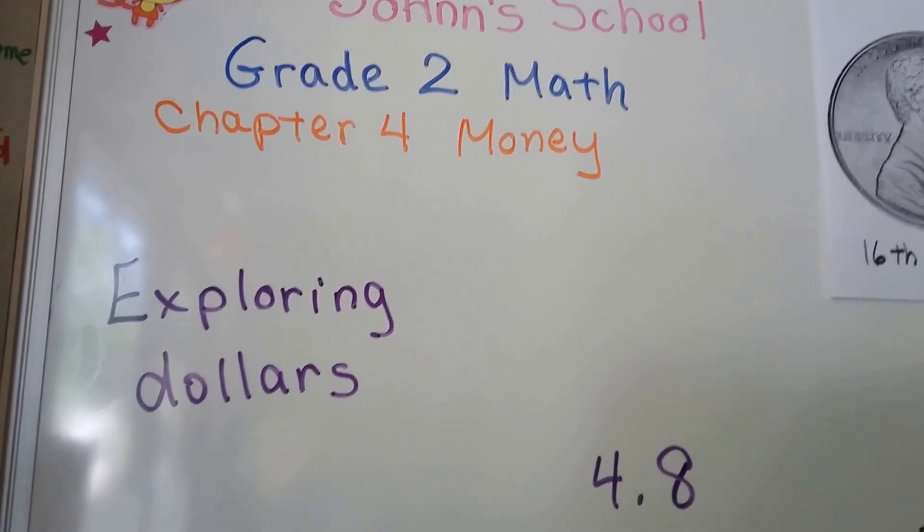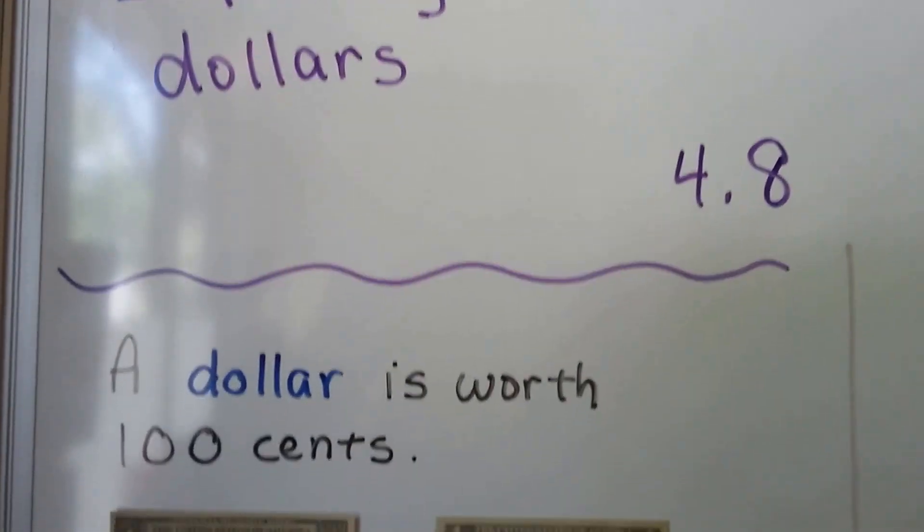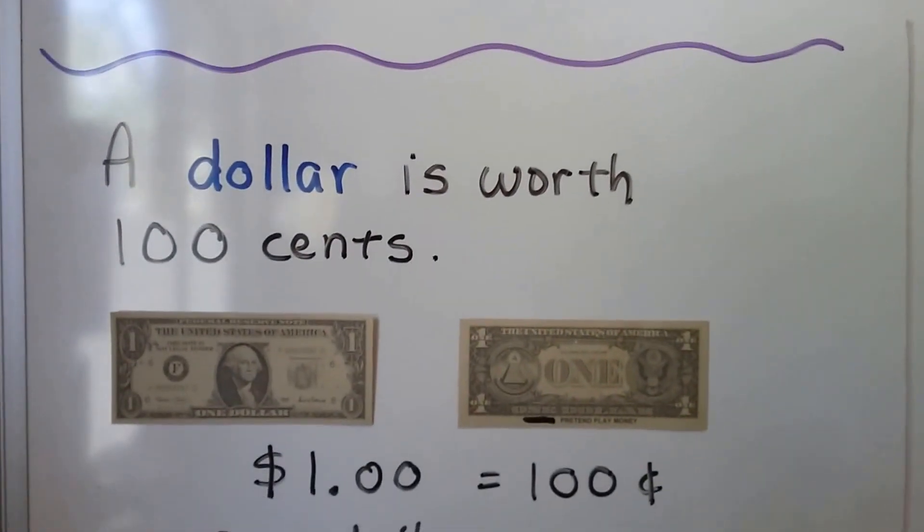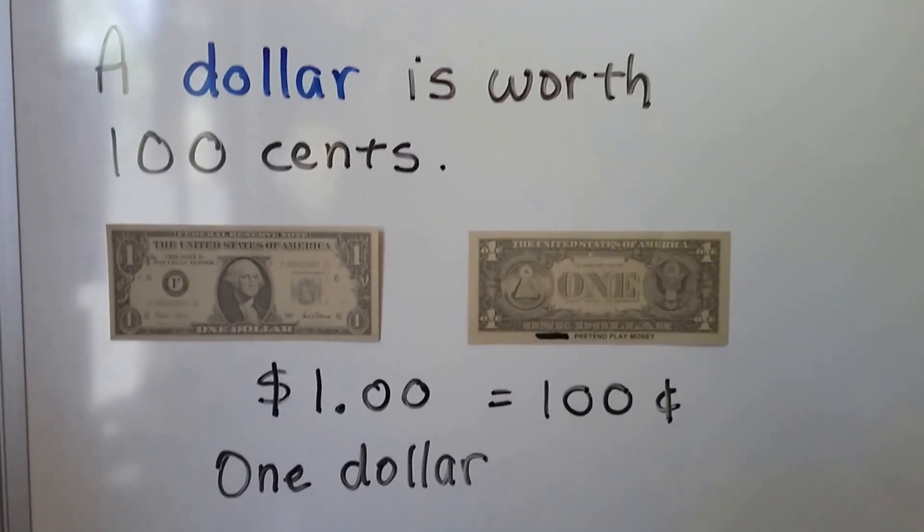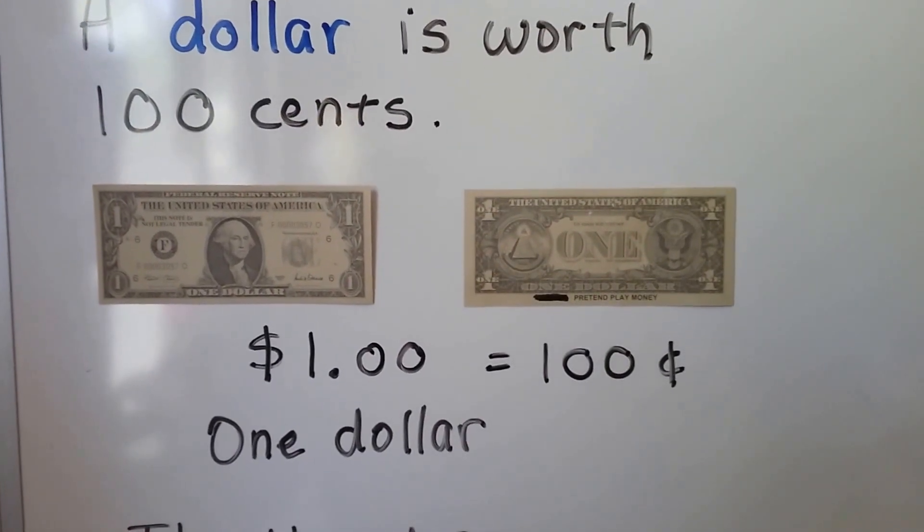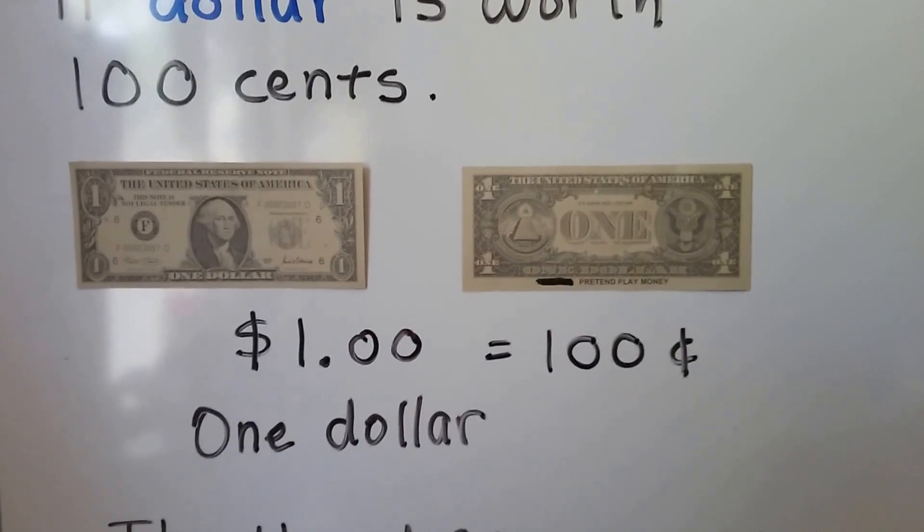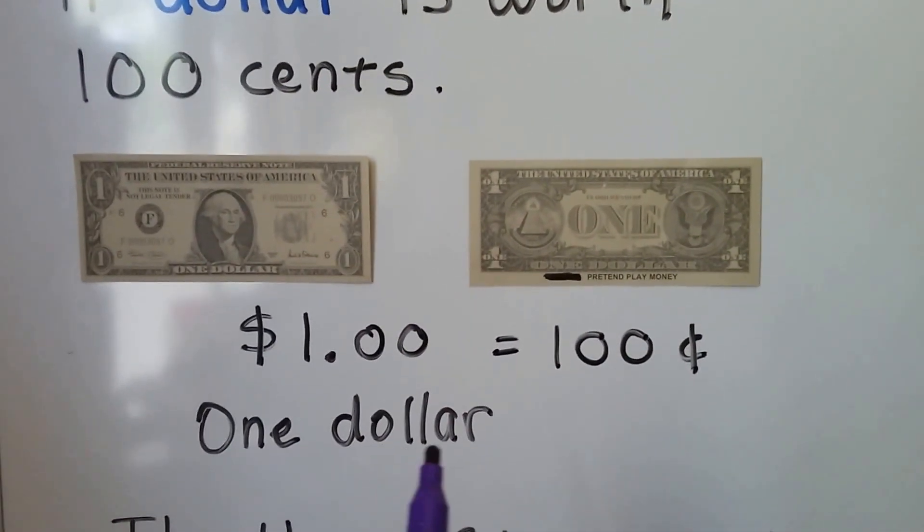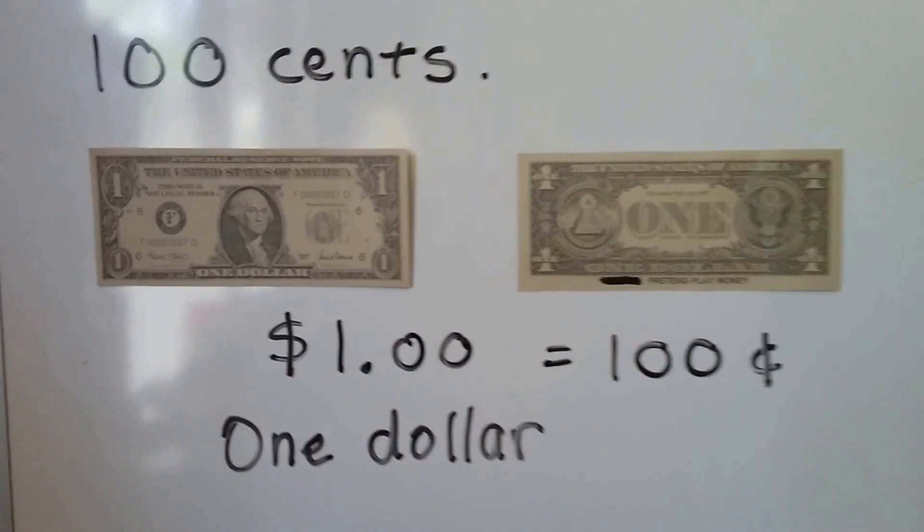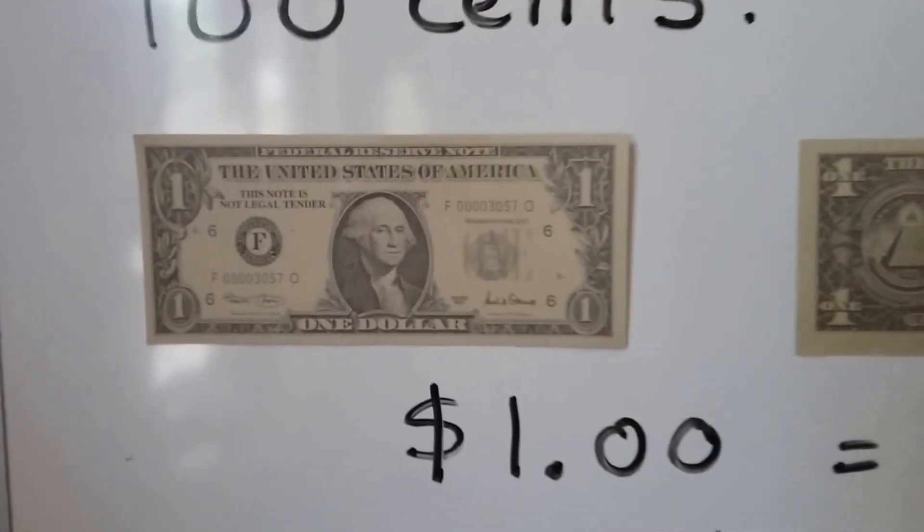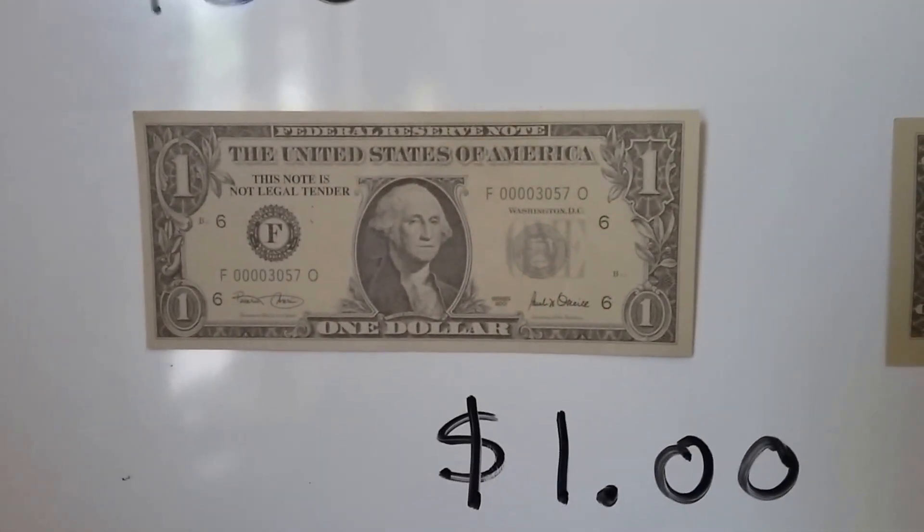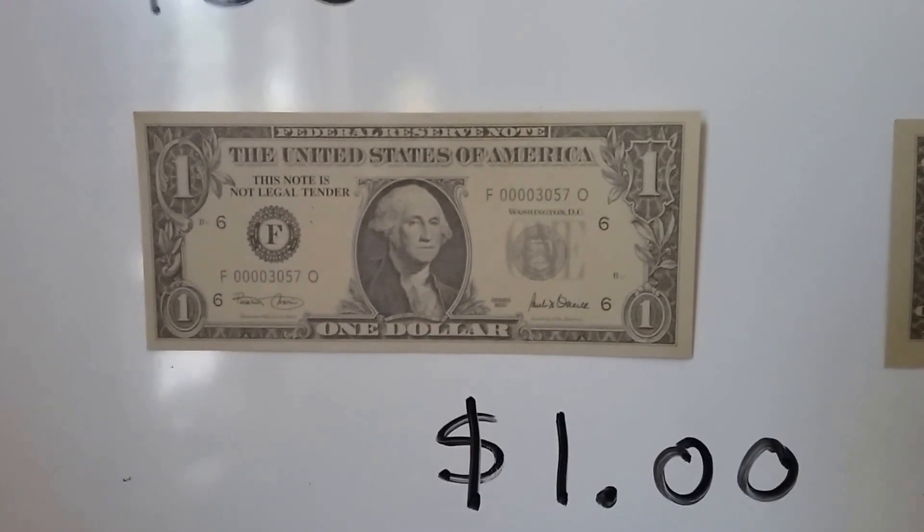Exploring Dollars, Lesson 4.8. A dollar is worth 100 cents. One dollar equals 100 cents. We write one dollar, D-O-L-L-A-R. This is what the front of a dollar looks like. This is play money, it's not a real dollar.